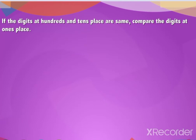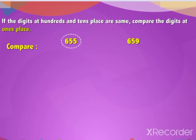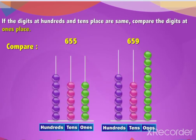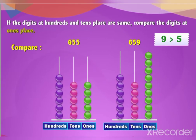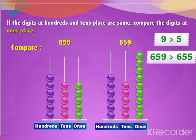If the digits at the hundreds and tens place are the same, compare the digits at the ones place. For example, let us compare 655 and 659. Since the digit at the hundreds place is 6 and the tens place is 5 in both numbers, we compare the digits at the ones place. Since 9 is greater than 5, hence 659 is greater than 655.